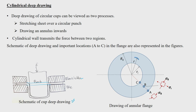We have to give appropriate blank holding force so that the inward movement of the sheet can happen with some restriction due to the contact friction between the sheet, blank holder, and the die. And when the punch moves down, you will see that basically the cup bottom is formed first.